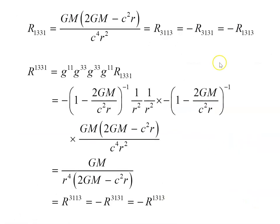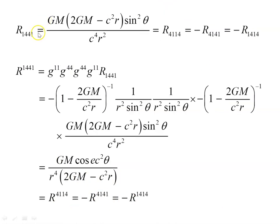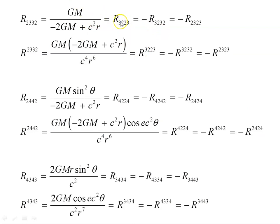Continuing in the same manner: R_1331 with all lower indices is the next component. By symmetry properties it generates four versions. Raising all indices using the inverse metric gives a specific expression which simplifies accordingly, and again the symmetry gives three further non-zero versions, two negative. Similarly for R_1441, which also has four non-zero symmetry-related versions, all differing only by sign. The remaining three of the six base components are handled analogously, speeding through the same process.